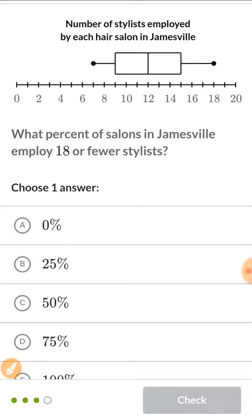And then finally, what percent of salons in Janesville employ 18 or fewer stylists? So 18 or fewer stylists. So we're just looking for the number 18. 18 is the max in this case. And we know that every portion of the box plot is 25%. So 25, 25, 25, and 25.